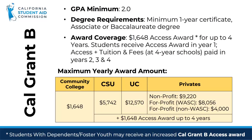This grant operates a little differently because in the first year, the vast majority of students will only receive the $1,648 access award portion of the grant, with the award for tuition and fees starting in the second, third, and fourth year.